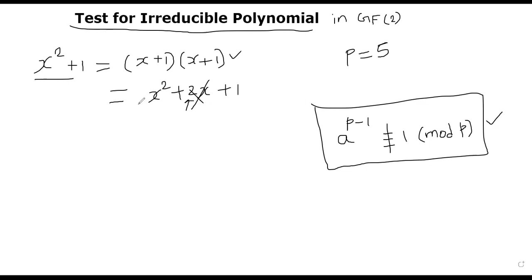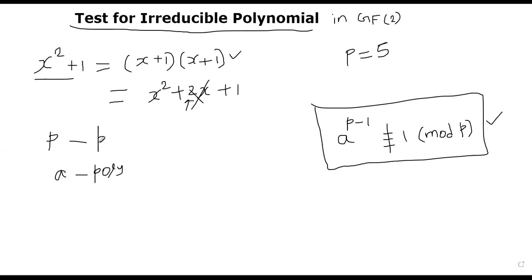So let us get back to this problem now. We have to map this to the world of polynomials. We are given a polynomial p — not a prime number, just a polynomial. We will randomly generate lots of polynomials a, where a is a polynomial of smaller degree than p. And if we find a witness polynomial a...